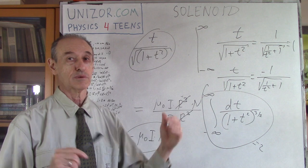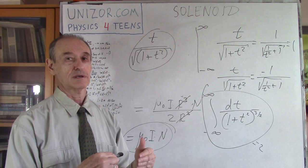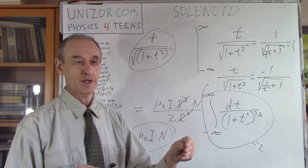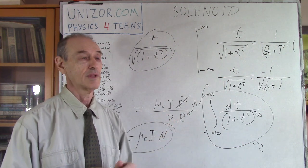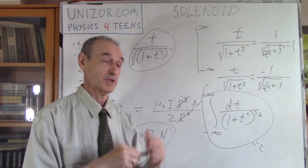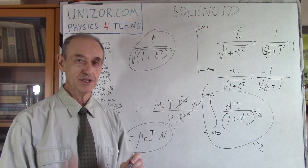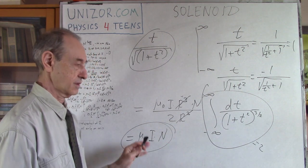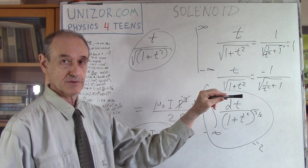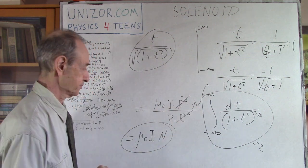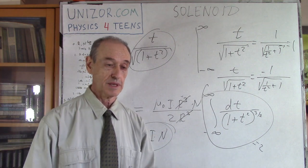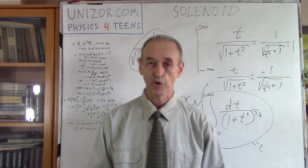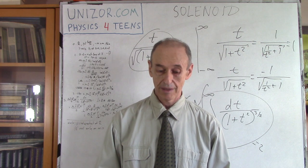Textbooks usually say that everywhere inside this infinite solenoid the magnetic field is exactly the same as on the axis — it's uniform. I have not verified this with calculations myself, and I think there may be some deviation, but probably very small. If the radius is very large, near the wire itself the field might differ from the center, but with infinite length the mathematics becomes involved. Let's trust the textbooks that the field is uniform inside and does not depend on whether you're on the axis or slightly away from it, and it does not depend on the radius. That's basically it for today. Thank you very much — I suggest you read the notes for this lecture on Unizor.com under Electromagnetism, Magnetic Properties of the Current. Thanks and good luck.